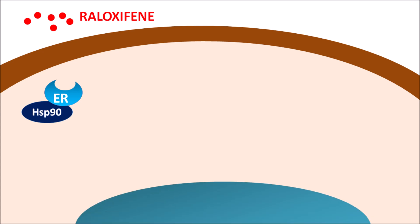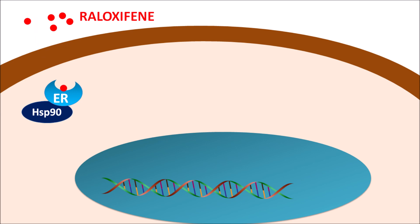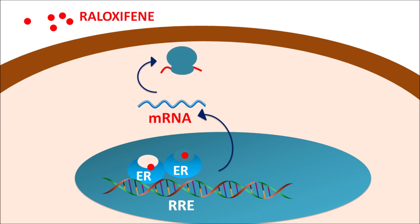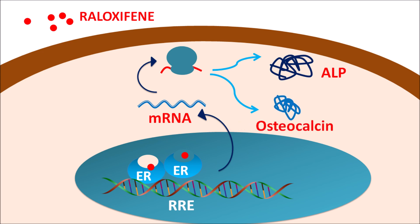These receptors are going to target the DNA within the nucleus. Raloxifene can bind to the estrogen receptors, which are activated and undergo conformational change. They are then internalized within the nucleus where they undergo gene regulation, and they interact with the DNA at a particular region which is responsive to Raloxifene — called the Raloxifene responsive element. This DNA region interacts with the estrogen receptors leading to gene transcription, resulting in the development of mRNA, which results in protein synthesis. Finally, Raloxifene can induce protein synthesis which reduces osteoporosis. It can induce the expression of alkaline phosphatase enzyme, increase the expression of osteocalcin, and increase collagen synthesis. All these proteins increase osteoblast activity and reduce osteoclast activity.